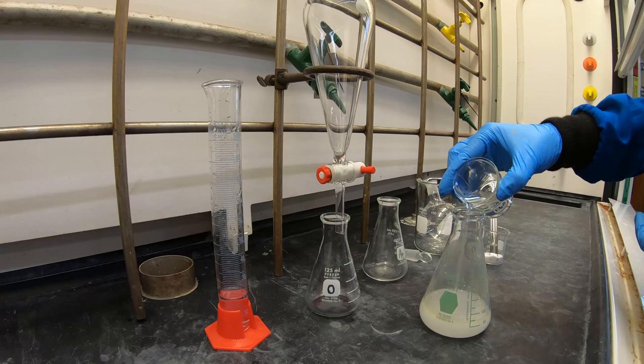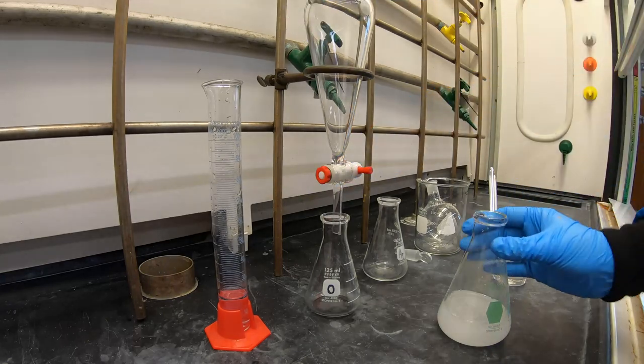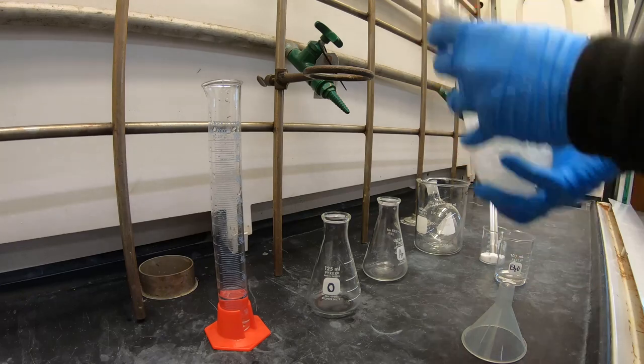Now add your first portion of ether to your flask, swirl, and then transfer to your separatory funnel. Add your stopper to the funnel and then thoroughly mix with shaking.